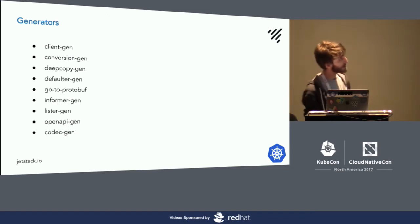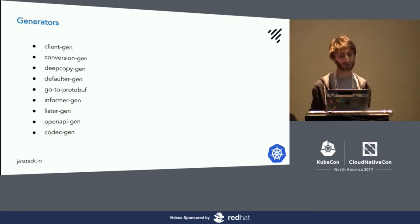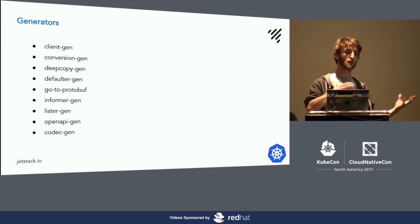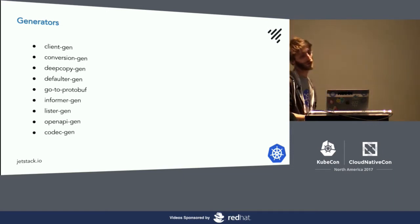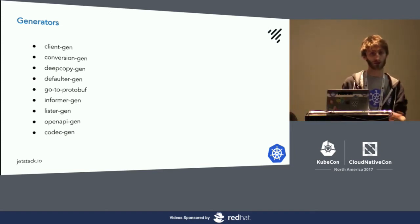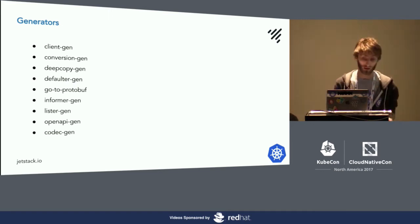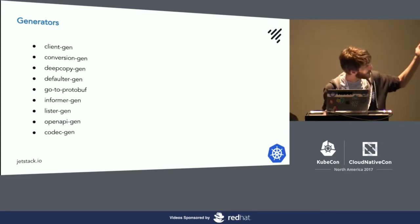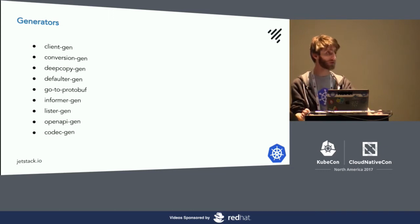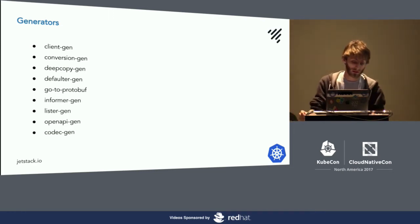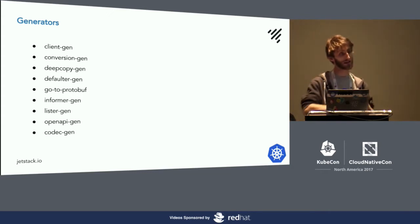Here's a list of some of the generators. We've got client generators for generating that REST client — nice typed Go. Conversion generators for when we need to do breaking changes. Deep copy generators — if you want to take a copy of a struct and start working on it, you need deep copies. Defaulters, as mentioned. Go to protobuf, which generates protobuf definitions for our Go structures. Informers and listers — a nice cache so you're not hitting the API server constantly. And OpenAPI for generating swagger specs. We write our types once and everything else just comes for free.